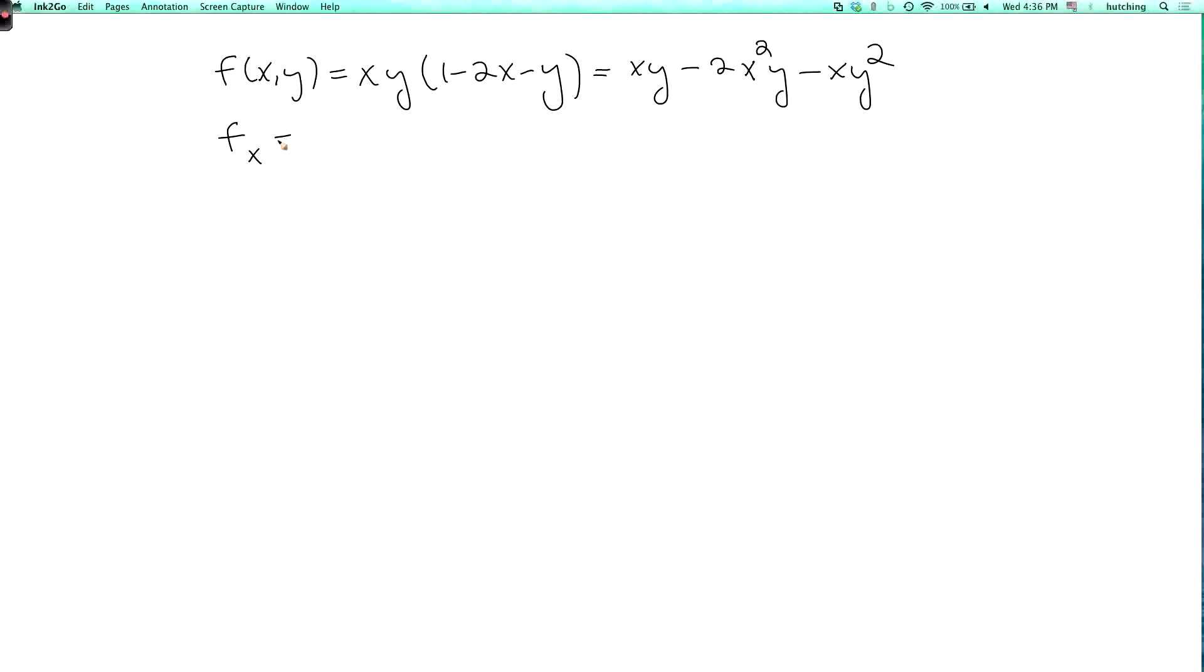Okay, so fx is y minus 4xy minus y², which I can factor as y times (1 minus 4x minus y). And fy is x minus 2x² minus 2xy. And this I can factor out an x to write it as x times (1 minus 2x minus 2y).